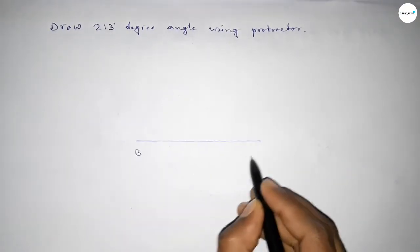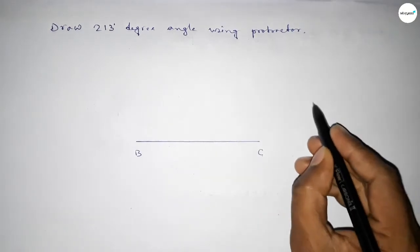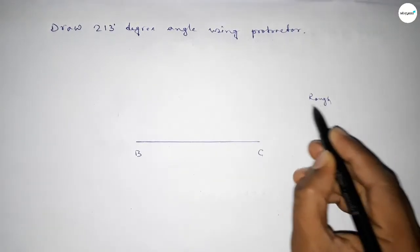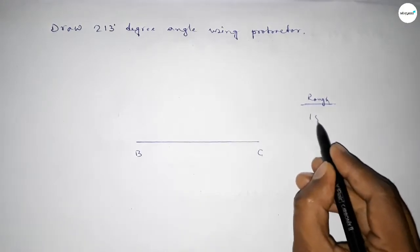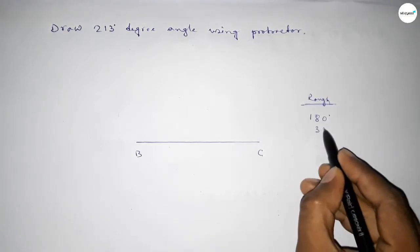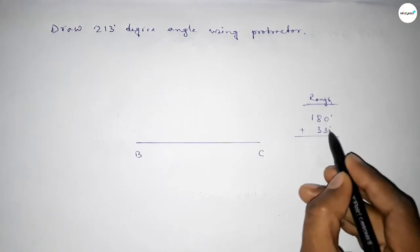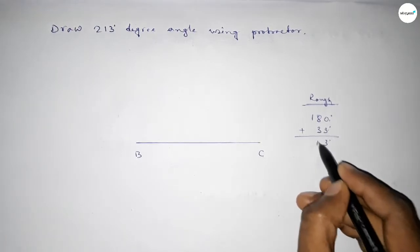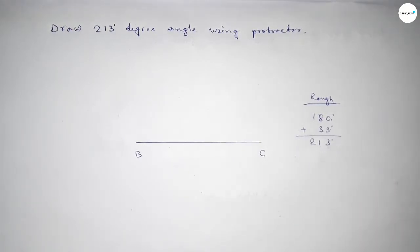Now let's discuss some calculation here. If we add 33-degree angle with 180 degrees, then we can get 213 degrees. So this is one and two. First, we have to count 180-degree angle on point B.